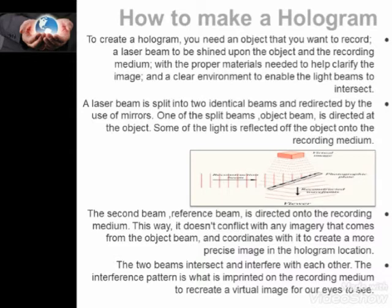A laser beam is split into two identical beams and redirected by the use of mirrors. One of the split beams, the object beam, is directed at the object, and some of the light is reflected off the object onto the recording medium. The second beam, the reference beam, is directed onto the recording medium. This way it does not conflict with any imagery that comes from the object beam, and coordinates with it to create a more precise image in the hologram location.